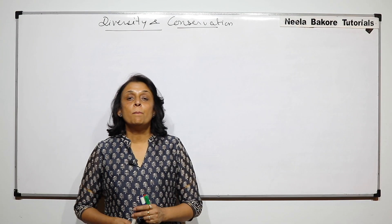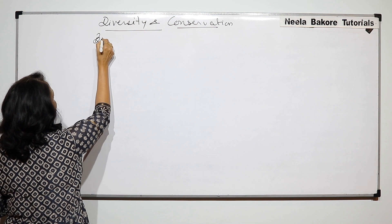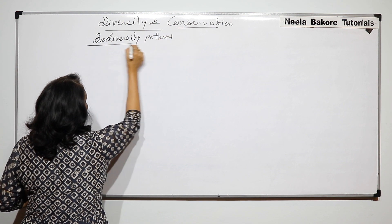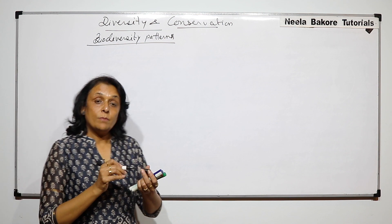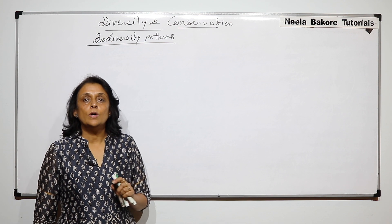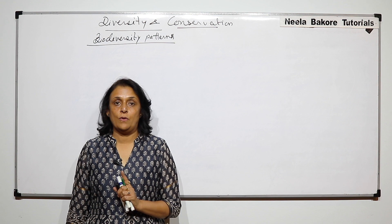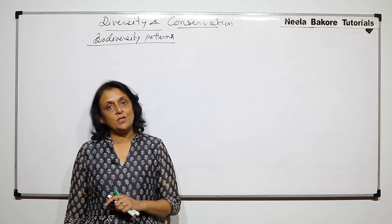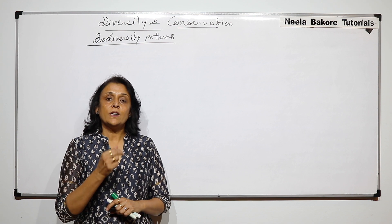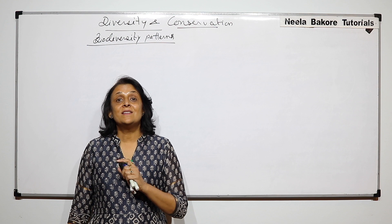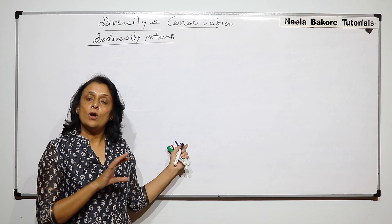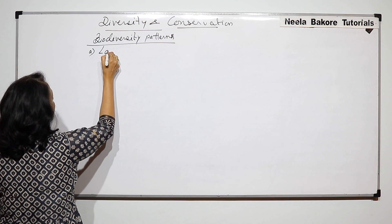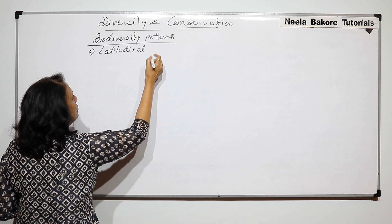In this part we'll talk about biodiversity patterns. What exactly is meant by biodiversity pattern is that all over the world the biodiversity or species diversity is not uniform. There are certain areas where more species are present, meaning it is more diverse, and certain areas where less species are present, so we say it is less diverse. So what are those factors and conditions which decide the biodiversity pattern or the number of species in a particular area? In this we'll talk about one factor which is called latitudinal gradient.